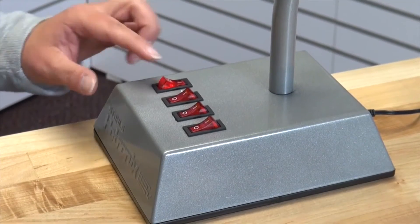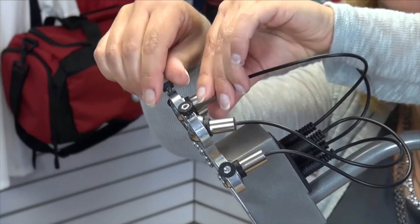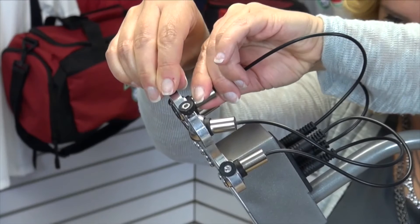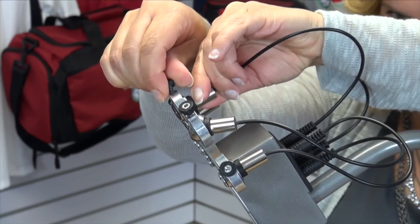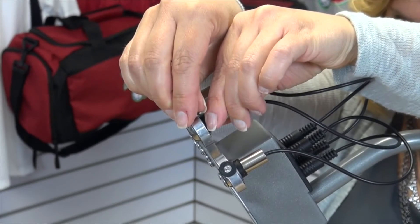Each laser can be turned on or off independently by the switches on the bottom of the base. The lasers can easily be adjusted by loosening the thumb screws on the top of each laser. Once you position the laser into place, tighten the thumb screws to secure its location.